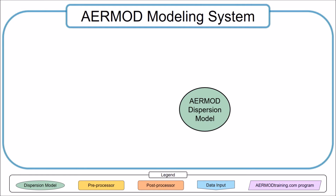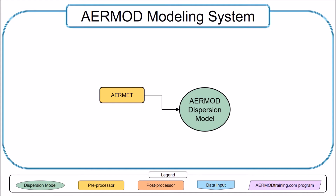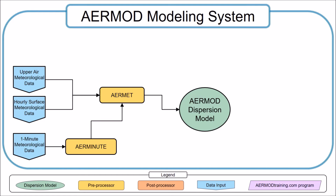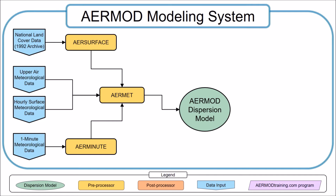The meteorological data files required to run AERMOD are generated by AERMET, which is the meteorological data preprocessor. AERMET requires upper air and hourly surface meteorological data. Typically, if the hourly surface data is obtained from the National Weather Service, AERMINUTE is used to calculate the hourly wind speed and direction from one-minute meteorological data.